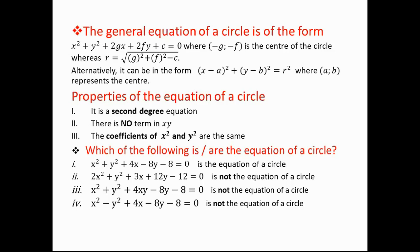Number two has 2x squared and y squared, so the coefficients are not the same — it is not the equation of a circle. Number three has an xy term — there is a multiplication between x and y, so it fails. Number four has a minus between x squared and y squared, meaning it has negative one in front of y squared and positive one in front of x squared — so it is also not an equation of a circle.